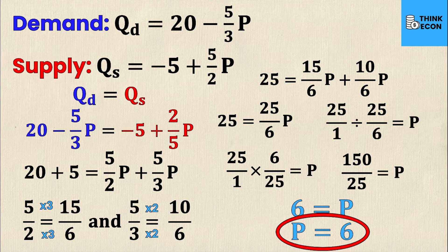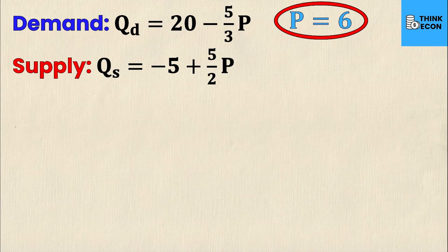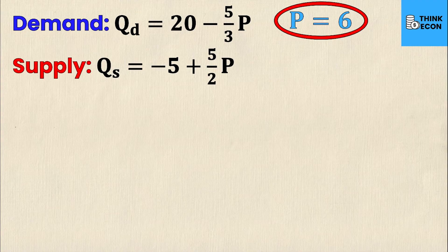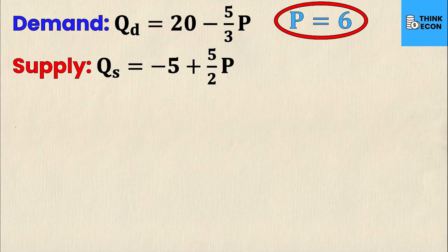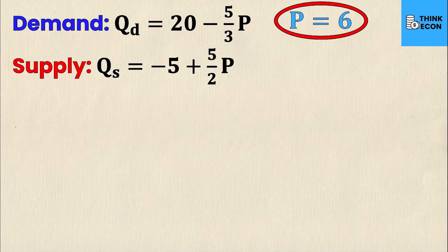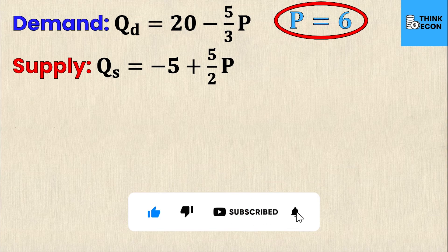Now I have my P equals 6 value. But what do I do with the equilibrium P value? Because the point of equilibrium is both a P value and a Q value. I need to take this P value and sub it back into the demand or supply equation. You might be wondering, which equation do I sub the 6 into? It doesn't matter because at equilibrium, QD equals QS. This means that no matter which equation you sub in P equals 6, if the equilibrium price is 6, it should give you the same answer for Q no matter which equation you sub it into. I'm going to sub it into both equations to show you that's the case.